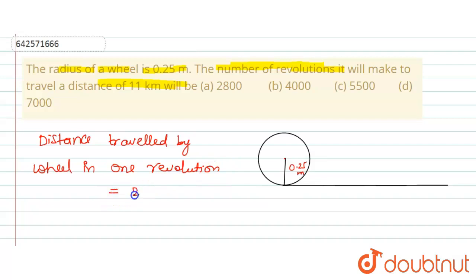that will be equal to 2πr, that is the circumference. So let's say this is point A and this is B, and the total distance covered is 11 kilometer, okay? So distance traveled by wheel in N revolutions